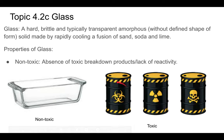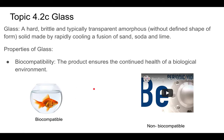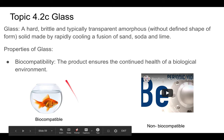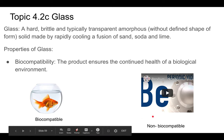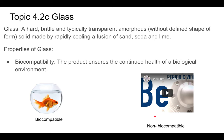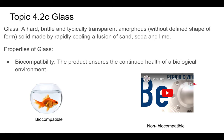Those symbols represent toxicity, biohazard, radioactivity, and toxic chemicals respectively. Glass is also biocompatible — it ensures the continued health of a biological environment, meaning you can put living things in it without it affecting them. An example of something that is not biocompatible is beryllium, the fourth element on the periodic table, which is apparently very toxic. Beryllium shields are used in X-ray crystallography because beryllium doesn't scatter X-rays.